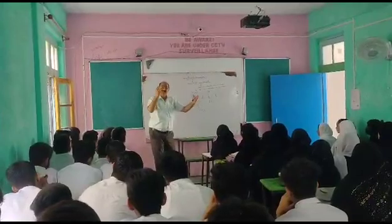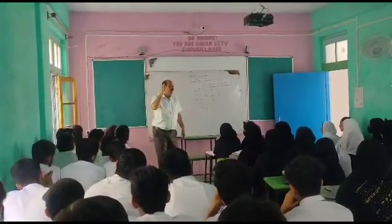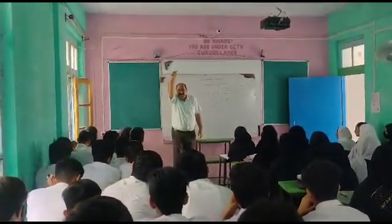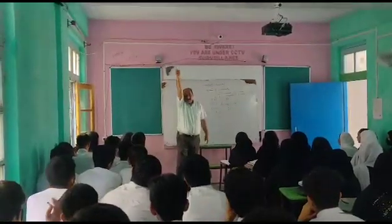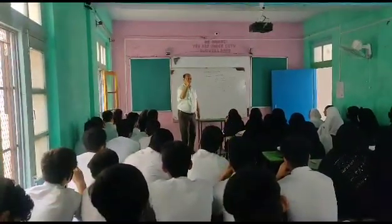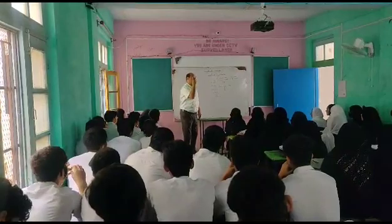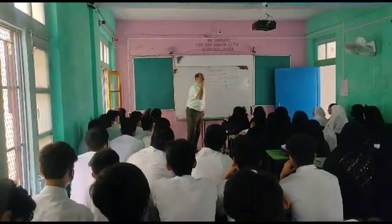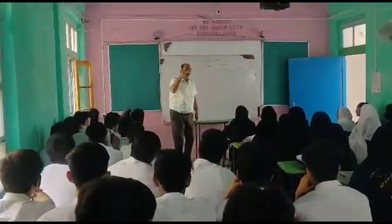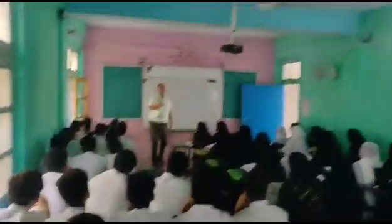Coordinate geometry is the geometry which is because of coordinates. We have two coordinates: X coordinate and Y coordinate. The other name of X coordinate is abscissa, and the other name of Y coordinate is ordinate.